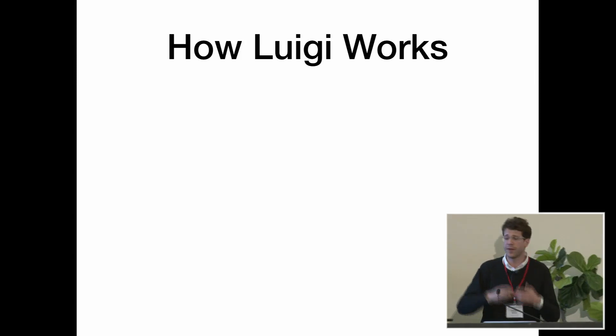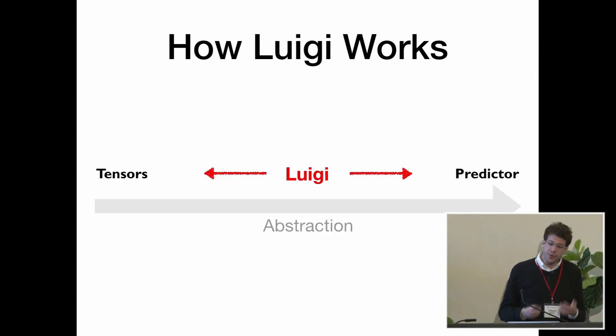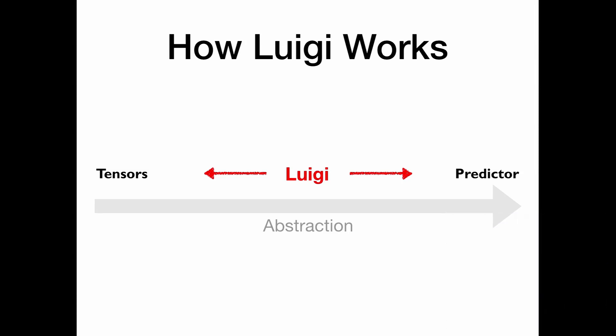So in this case, we created a hypothesis function from a finite state machine. But we could have used anything else. We could have used bigrams, a counter, something based on syntax. We could even have used another model. What's interesting here is that Luigi introduced an intermediate level of abstraction. So now we don't talk about what the model does in terms of tensors. We don't talk about it in terms of predictor. We talk about it in terms of functionality.